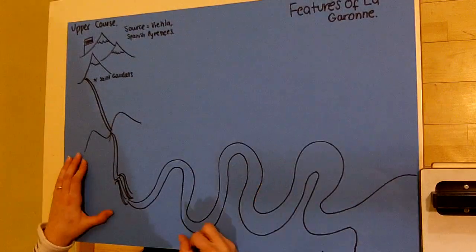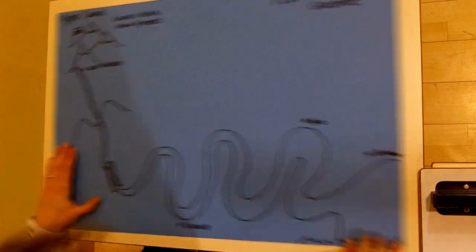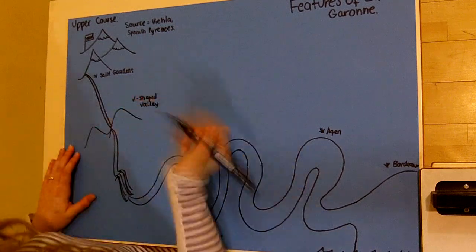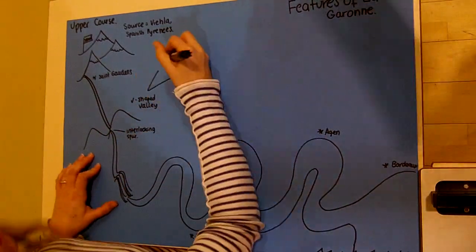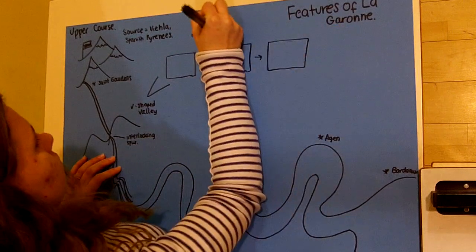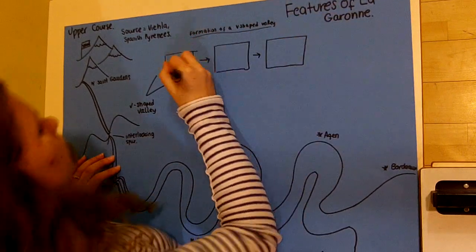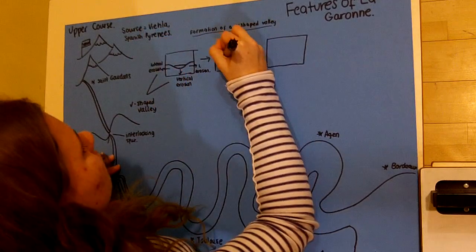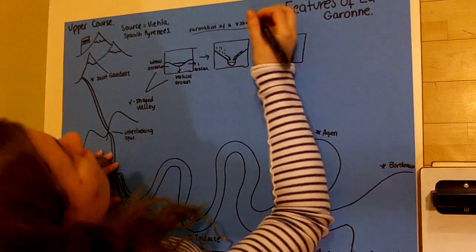V-shaped valleys and interlocking spurs are common features in the upper course of the river and form following prolonged vertical and lateral erosion. Weathering of the valley through precipitation results in steeper slopes and a deeper riverbed. This process becomes more apparent as we continue down the river. Gravity is also instrumental in the continued flow of the river.